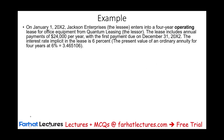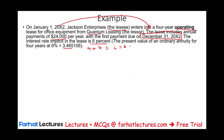Let's take a look at an example. On January 1st, year X2, Jackson Enterprises, the lessee, enters into a four-year operating lease for office equipment from Quantum Leasing. The lease includes an annual payment of $24,000 per year, with the first payment due December 31st, 20X2 — meaning the payment is due one year from the start date. The interest rate implicit in the lease is 6%. The present value of an ordinary annuity factor is 3.465106 for N=4, I=6%.